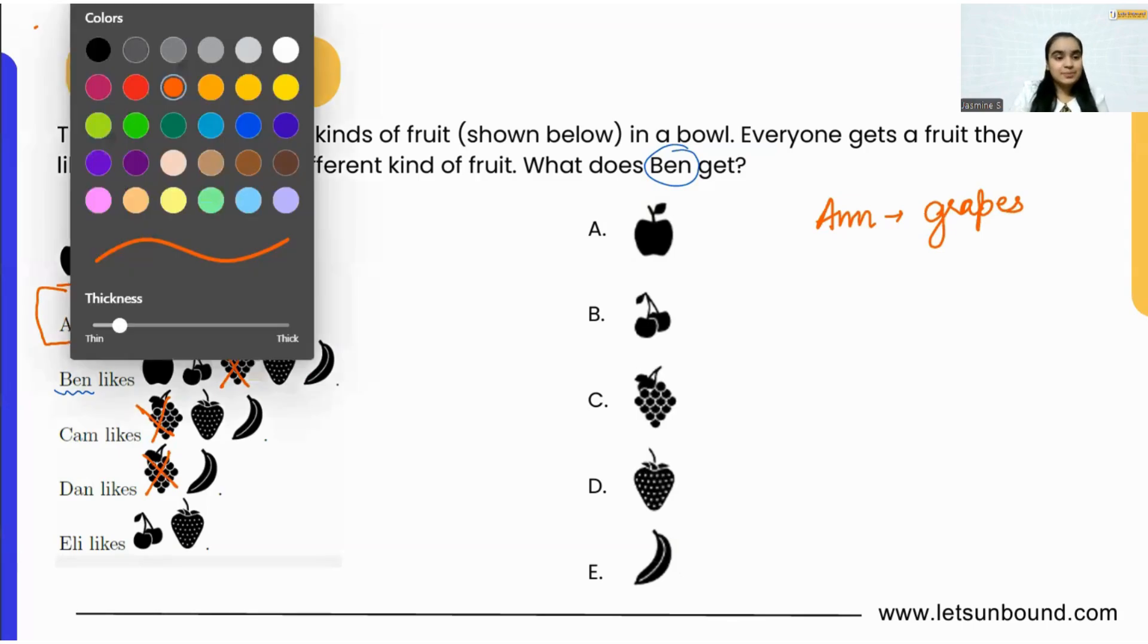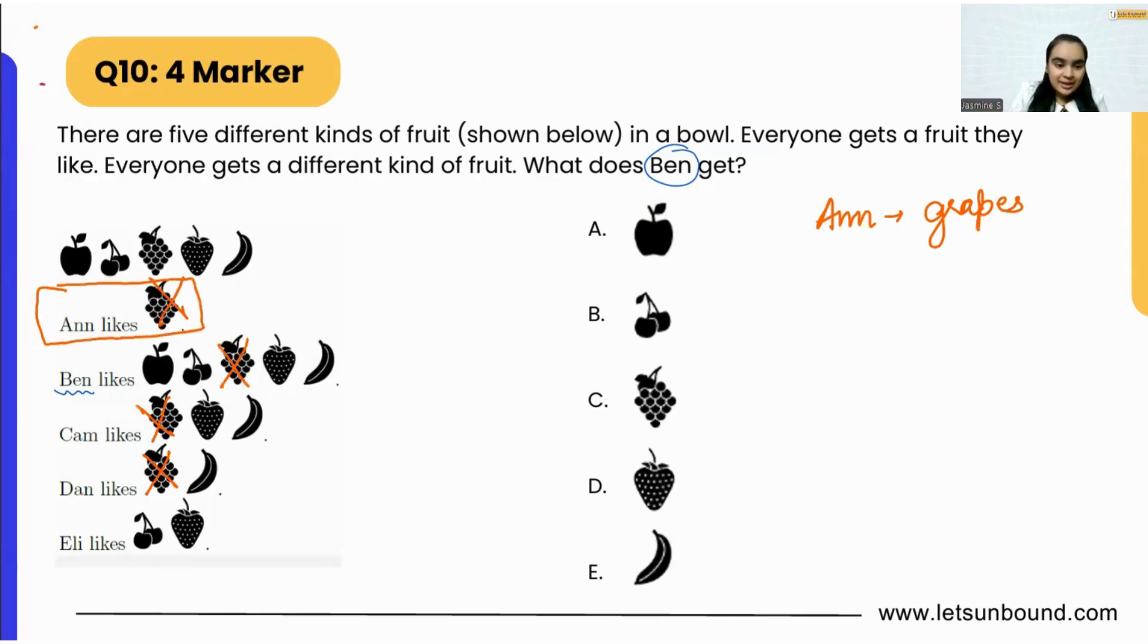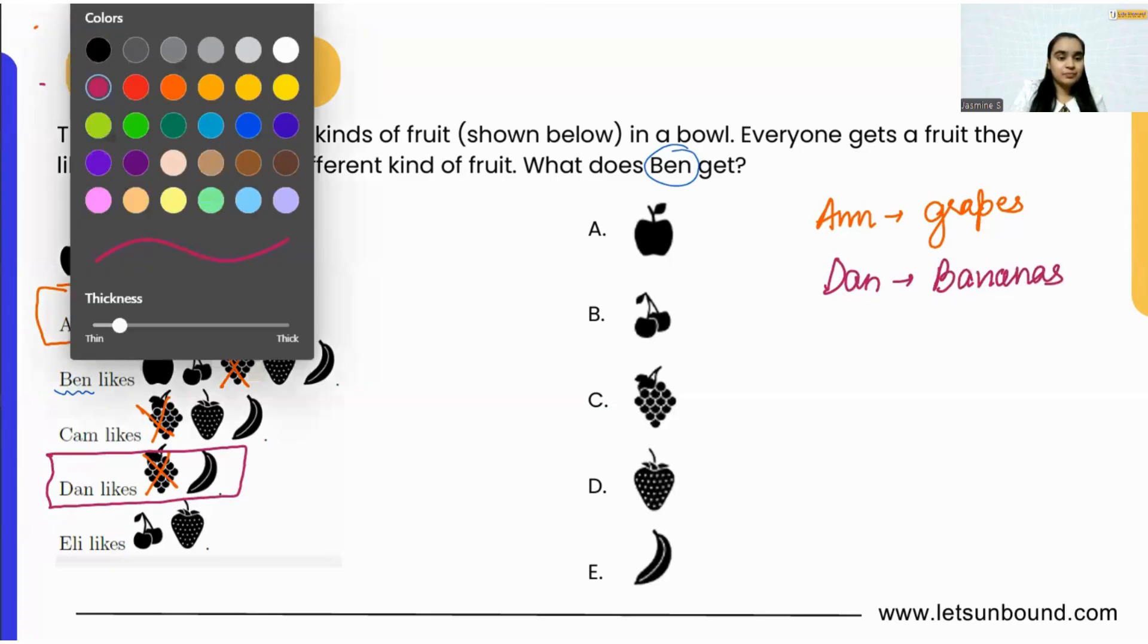Now after grapes, I can see that Dan is going to get bananas, because grapes are already with Ann. So Dan will get bananas. Now we can remove bananas from everywhere.